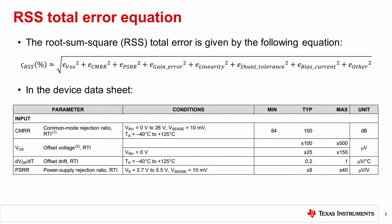In previous videos, we introduced the root sum of squares, or RSS, total error equation for current sense amplifier circuits, as shown here. Note that some error terms may not be shown.